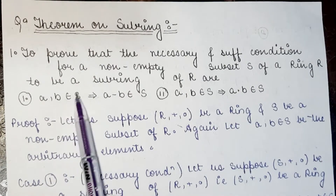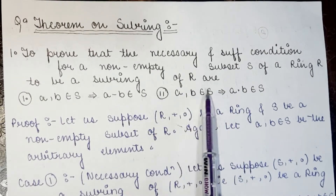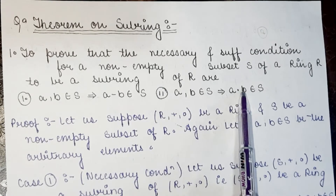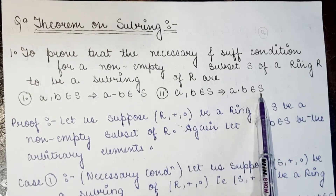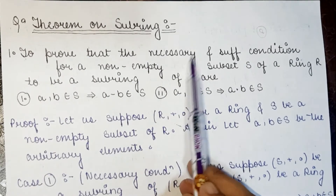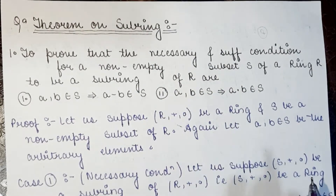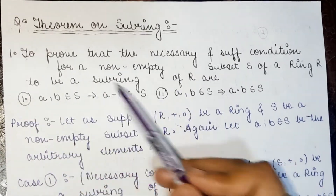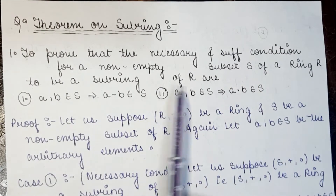The two conditions are: first, if A, B belongs to S, then A minus B belongs to S. Second, if A, B belongs to S, then A dot B (under multiplication) belongs to S. We will prove these are necessary and sufficient conditions for S to be a subring of R.